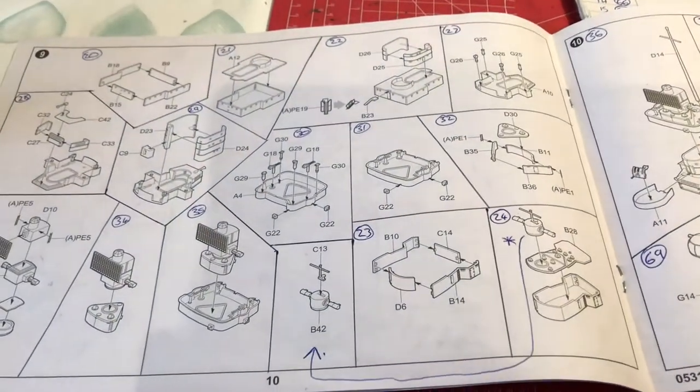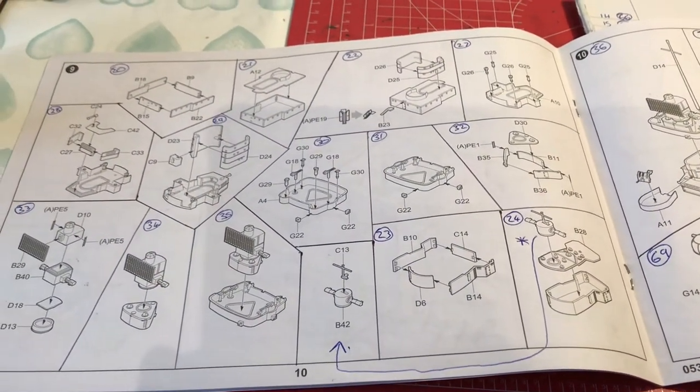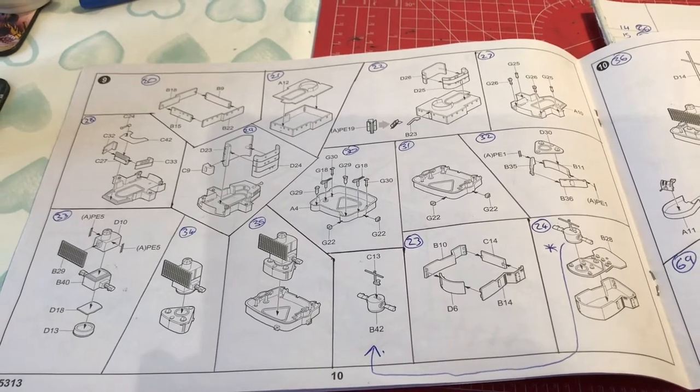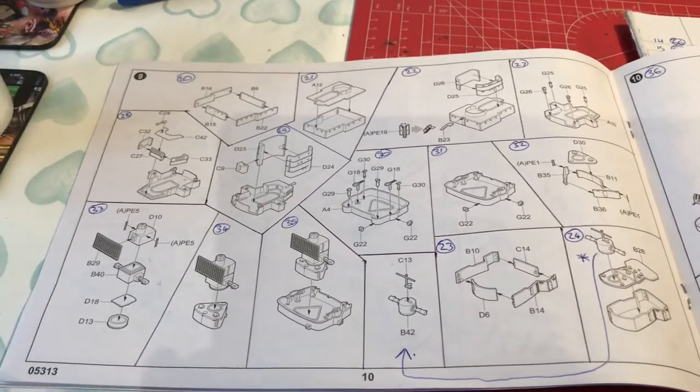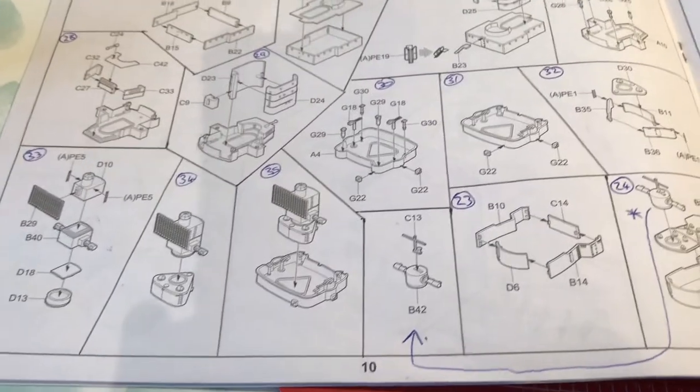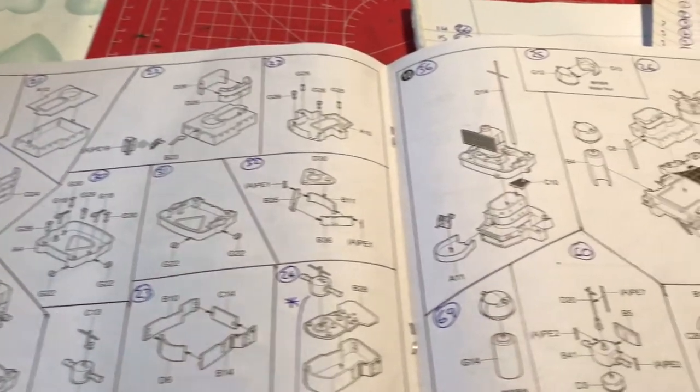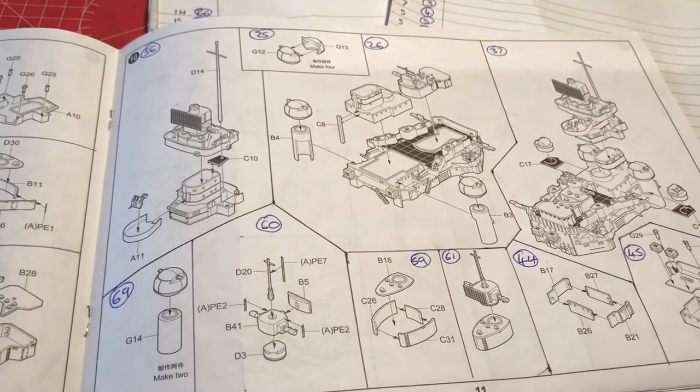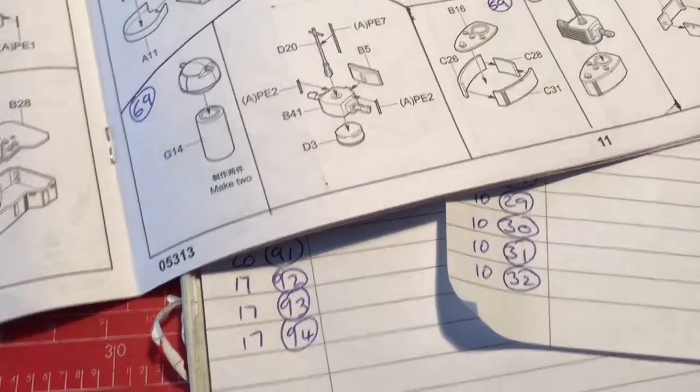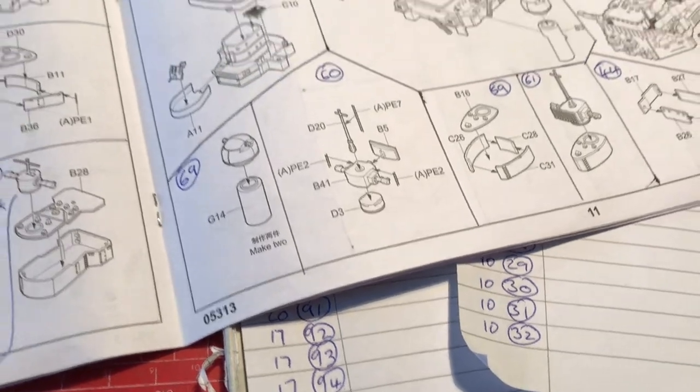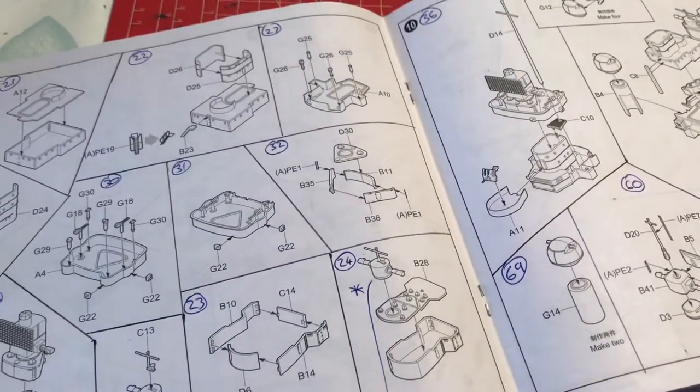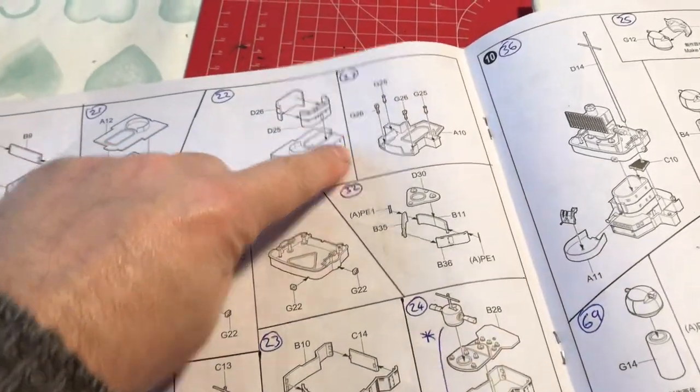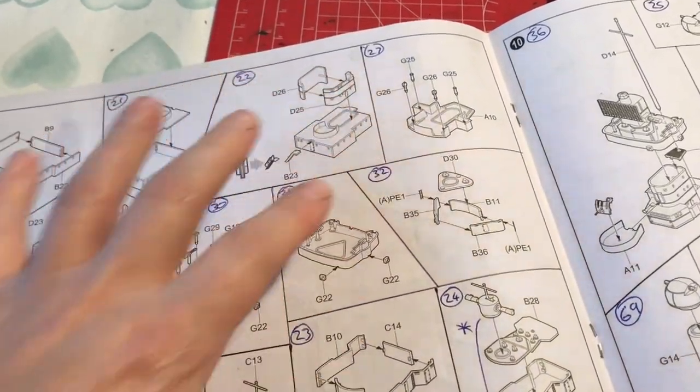We've now divided all the assemblies up and numbered them in the sequence that I want to build them in. So we've gone from 22 build sequences in the Trumpeter instructions to 94 steps.